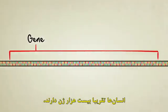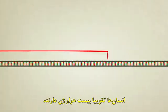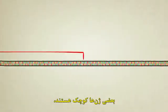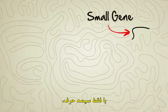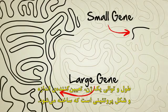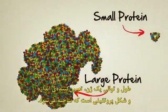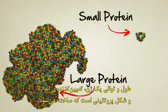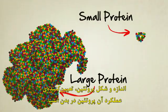A single strand of DNA contains thousands of genes, or unique protein recipes. Humans have roughly 20,000 altogether. Some genes are small, only about 300 letters long; others are well over a million. The length and sequence of a gene determine the size and shape of the protein it builds, and the size and shape of the protein determine the function that protein will have inside the body.